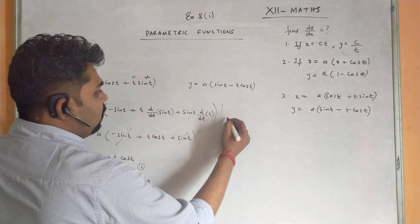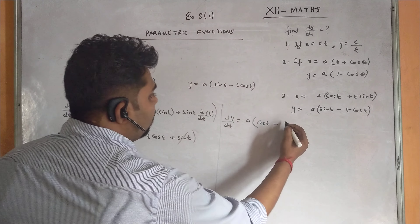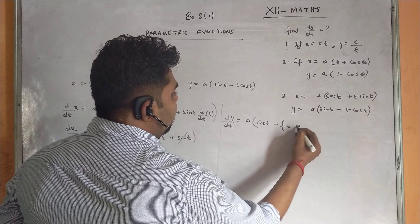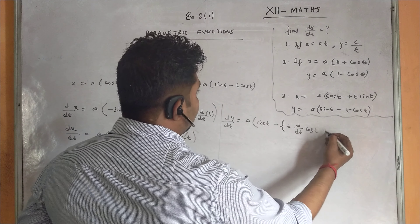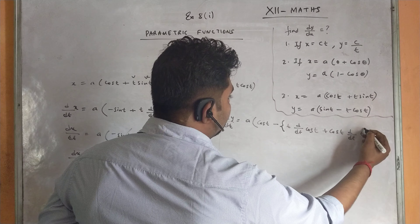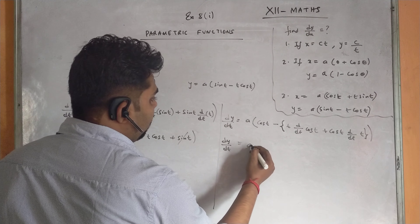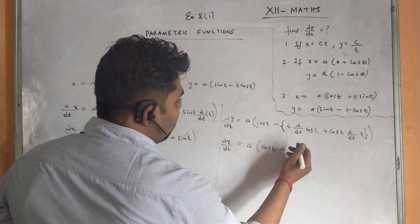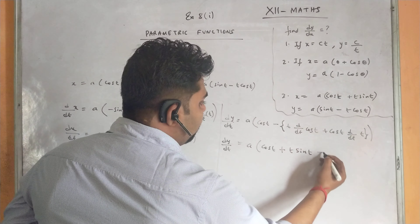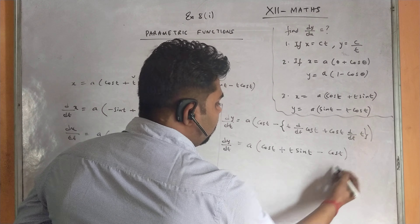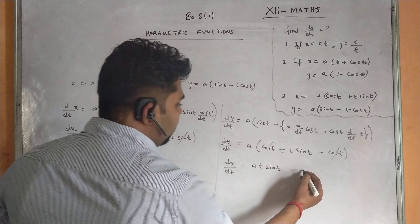Differentiating y with respect to t: dy/dt = a·[cos t - (t·(-sin t) + cos t·1)]. So dy/dt = a·[cos t + t·sin t - cos t]. The cos t and -cos t cancel, giving dy/dt = a·t·sin t — equation 2.